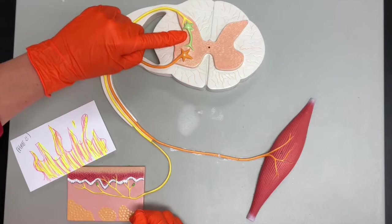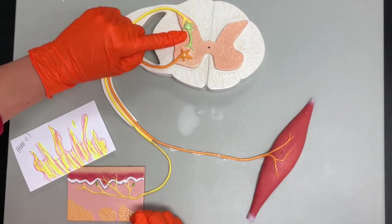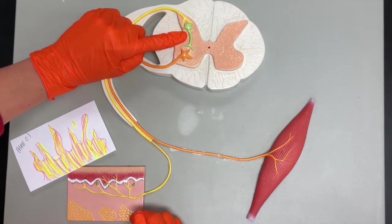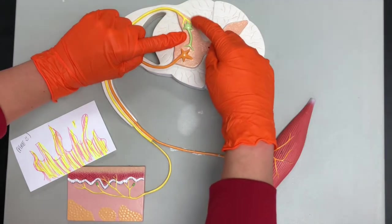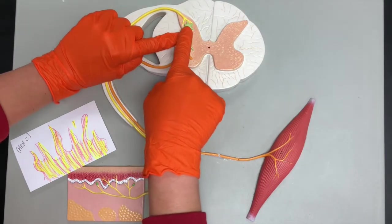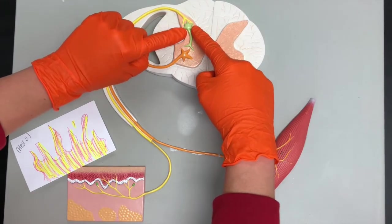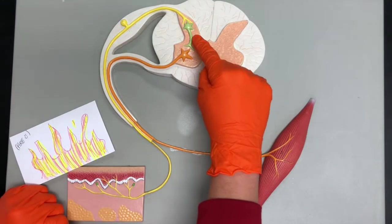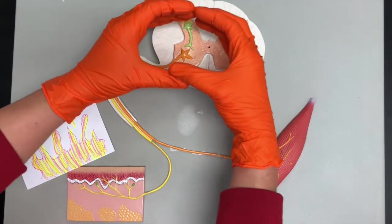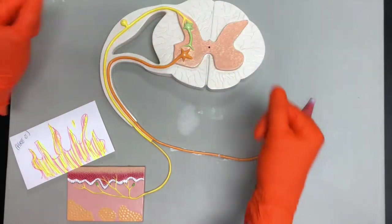That sensory neuron will then connect to an interneuron. Remember that interneurons have that multipolar shape. You can see here's the cell body and we have multiple processes coming off of that. Also remember that interneurons lie solely within the central nervous system.